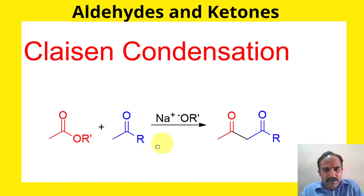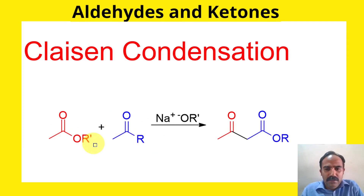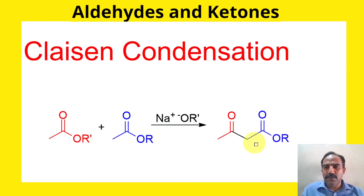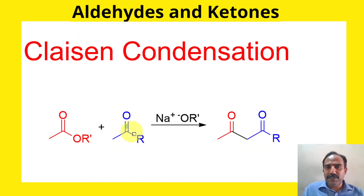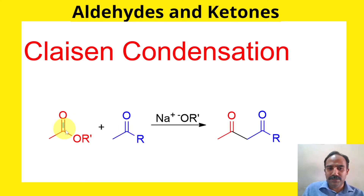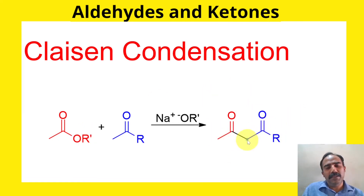If it is an ester and both species are esters, then the product will be a beta-keto ester. So let's take the case of a ketone: a species which can be converted into an enolate reacts with an ester, adds to the ester, OR' leaves, and we get a beta-diketone.